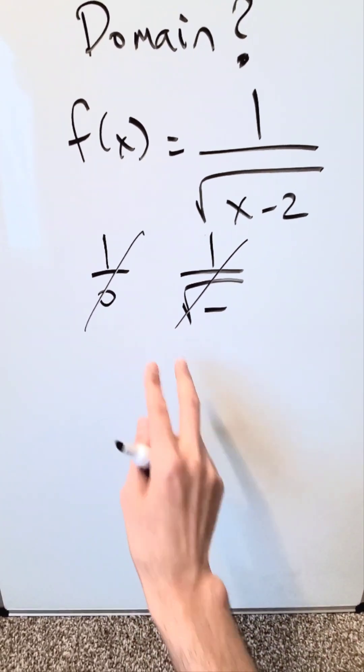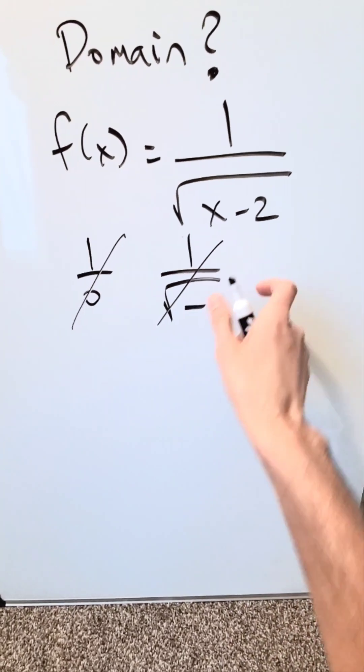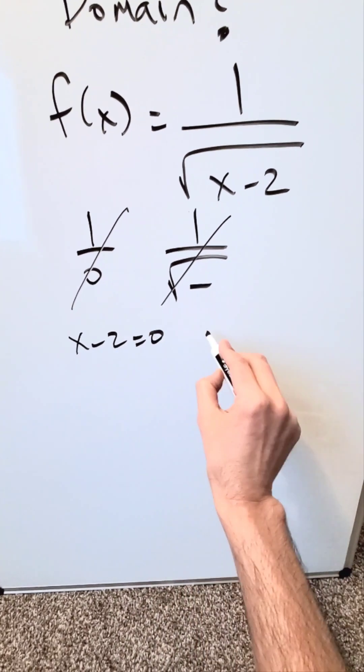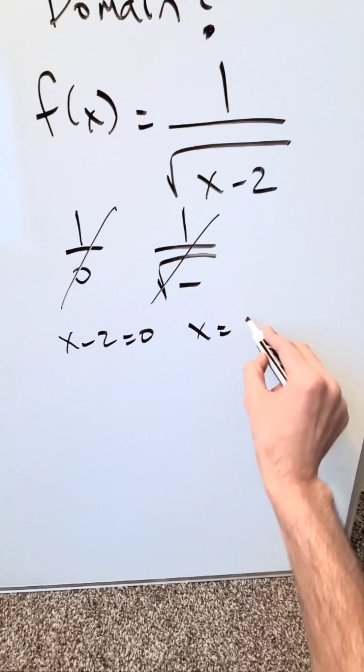How can you arrive at either of these scenarios? Look here, x minus 2 cannot equal 0. x minus 2 is equal to 0. The zero of this function is equal to 2.